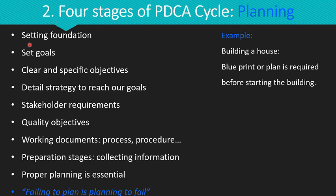The PDCA cycle has four stages. The first stage is Planning. Planning is setting the foundation of what we desire to achieve in our organization — this is where we set our goals or objectives. It is a critical starting point where we lay the groundwork for everything that follows. We need to be clear and specific about what we want to achieve, because setting vague or unclear goals can lead to confusion and lack of direction.